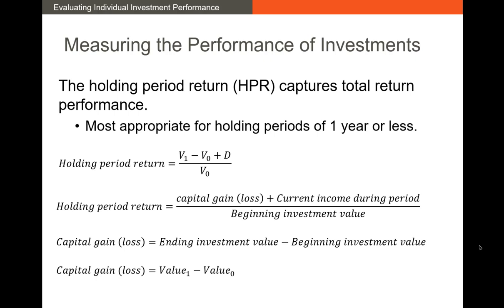So how do we measure our portfolio's performance? The most common starting point is to calculate our holding period return, or HPR. That's our total return that includes capital gains and any income received. The formula is: the value of your portfolio at the end of the period, minus the value at the beginning of the period, plus any income received during the period — call that D for dividends — all divided by the value of the portfolio at the beginning of the period.